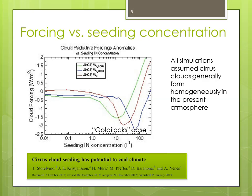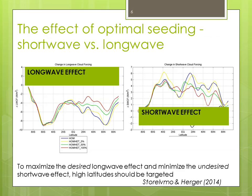One big assumption we made for this study was that in the unseeded atmosphere, all cirrus clouds formed by homogeneous ice nucleation. We now know from field studies that that's not a correct assumption, so we relaxed it in follow-up studies. We also decomposed the radiative effect into a long-wave and a short-wave component. The different curves represent two degrees of relaxation of this homogeneous nucleation assumption, and you can see that you can still get a lot of cooling even when relaxing that assumption.